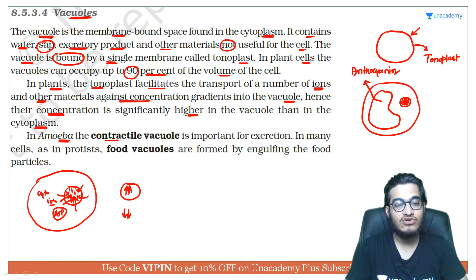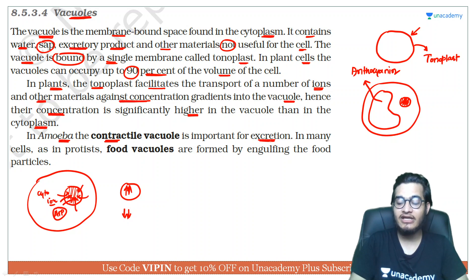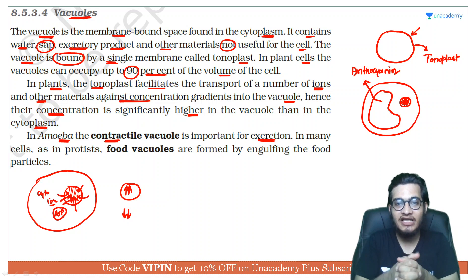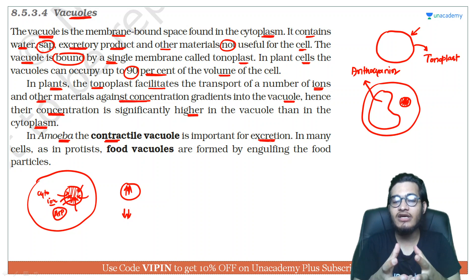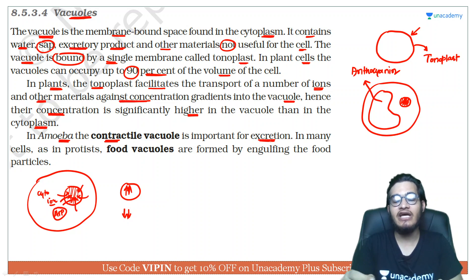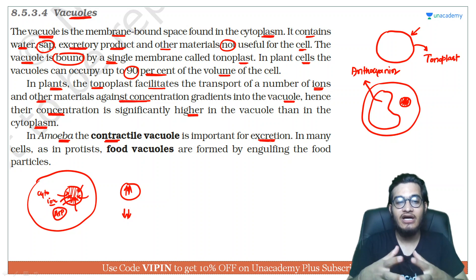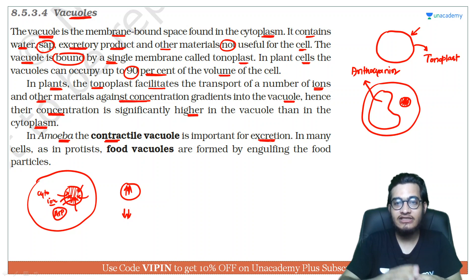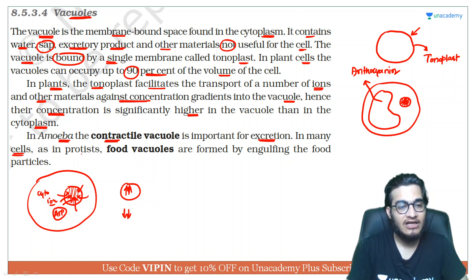Amoeba ke andar jo contractile vacuoles hote hain, ye excretion mein help karte hain. Contractile vacuoles aise vacuoles hain jo contract ho sakte hain. Jab ye contract hote hain, unke andar ka material squeeze hota hai aur woh body ke pores se bahar nikal jaata hai ya vesicle ki form mein ejaculate ho jaata hai. Yani contractile vacuole ka kaam hai ki jab ye contract hoga toh additional material cell se bahar chala jaayega.